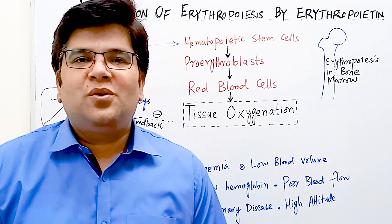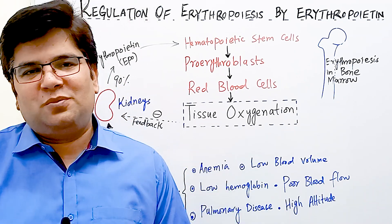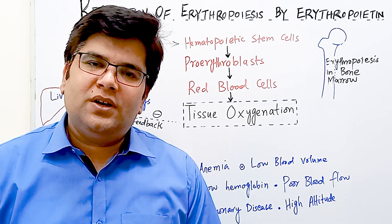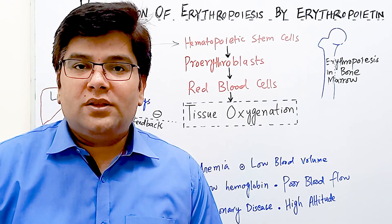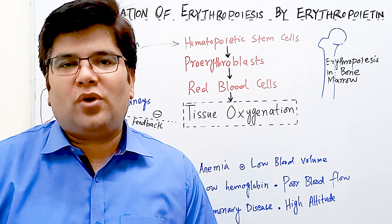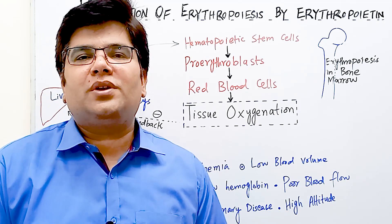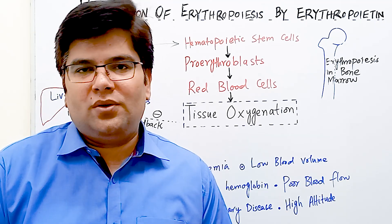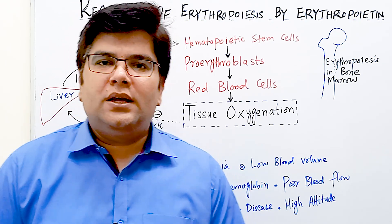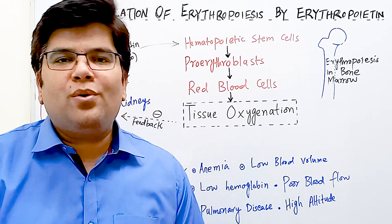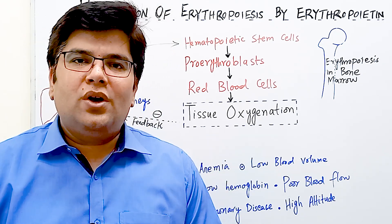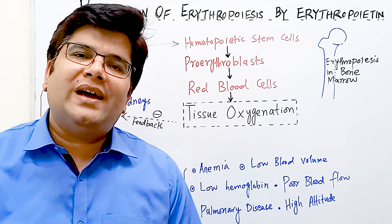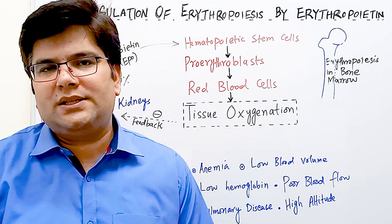Welcome to Dr. Rumi's lectures. In our previous session we studied the stages of erythropoiesis — how from the pluripotent hematopoietic stem cells, colony forming unit erythrocyte, and then pro-erythroblasts are produced, which pass through successive stages to give rise to mature red blood cells.